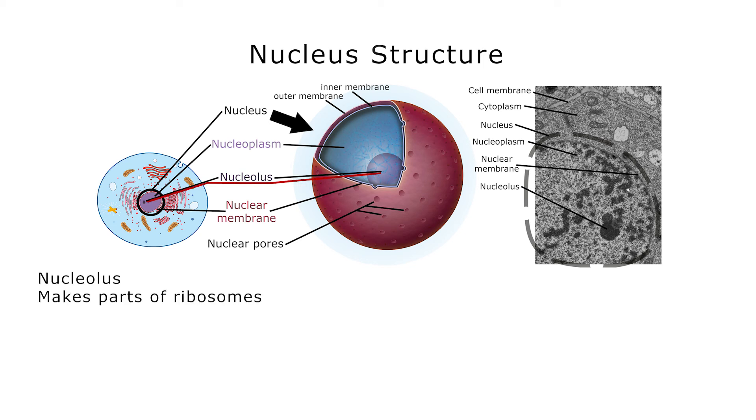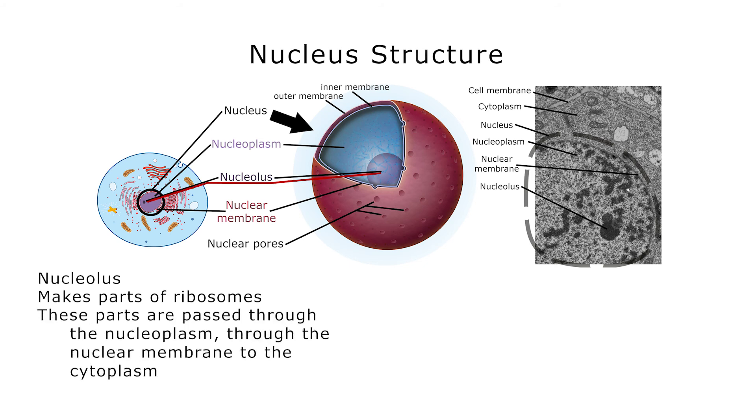So we also see a structure in here called the nucleolus. And the nucleolus makes parts of ribosomes. It makes these things in the nucleus and then they pass out through the nucleus into the cytoplasm and are assembled into full ribosomes. So you might be wondering, you know, I just told you that the DNA needs to communicate so it sends messages out of the nucleus. And then I just told you that the nucleolus makes parts of ribosomes. So you might be wondering, how do they actually get out since the nucleus itself, the nuclear membrane, is a double lipid bilayer.